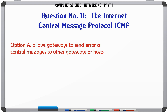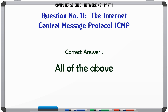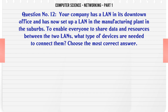The Internet Control Message Protocol (ICMP): A. Allows gateways to send error or control messages to other gateways or hosts. B. Provides communication between the Internet Protocol software on one machine and the Internet Protocol software on another. C. Reports error conditions to the original source — the source must relate errors to individual application programs and take action to correct the problem. D. All of the above. The correct answer is: All of the above.